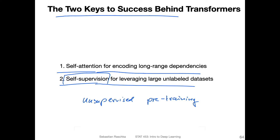This is why it's called self-supervised learning — because it's creating the label itself, in a sense. It's not the human who creates the label or some other process; it's essentially just from the structure of the data.